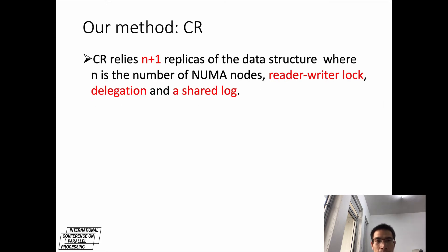CR relies on n+1 replicas of the data structure, where n is the number of NUMA nodes, reader-writer lock, delegation, and a shared log. The purpose of this design is to make it possible for the local server thread to acquire an available replica in exclusive mode while leaving one replica in shared mode.